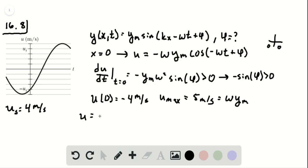And this also has to be equal to ω times y_m. So we have u equals negative u_max times cosine of negative ωt plus φ. We want this at t equals 0. So this is going to be 4, and this is going to be 5, and this is going to be 0. So we have that the phase is going to be an arc cosine of 4 fifths. And so this is going to be either plus or minus 0.645 radians.